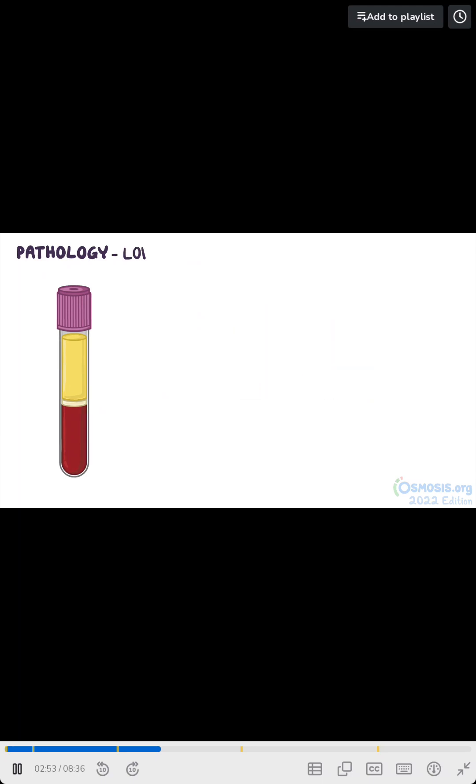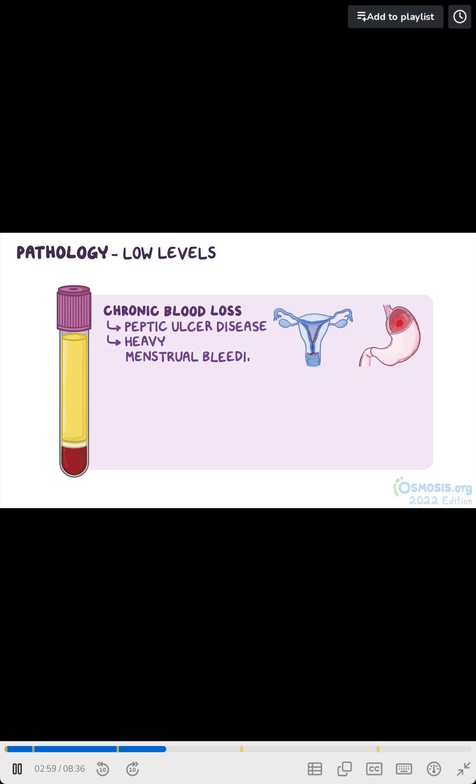In contrast, low levels can be caused by chronic blood loss due to conditions like peptic ulcer disease or heavy menstrual bleeding, decreased RBC production caused by certain hemoglobinopathies, or increased RBC destruction, which can happen with certain autoimmune disorders.